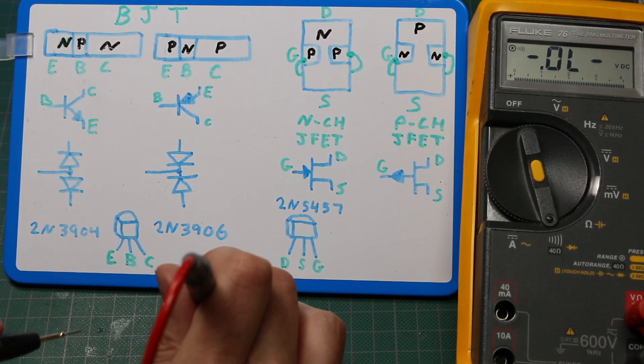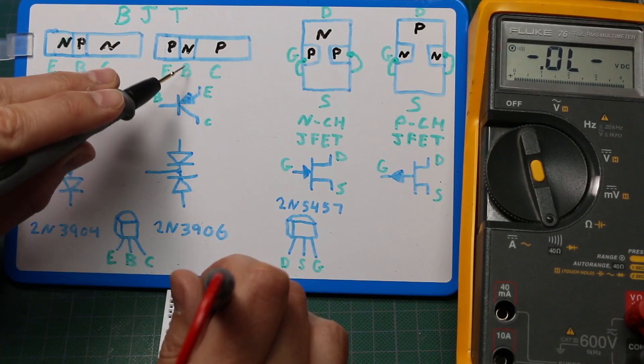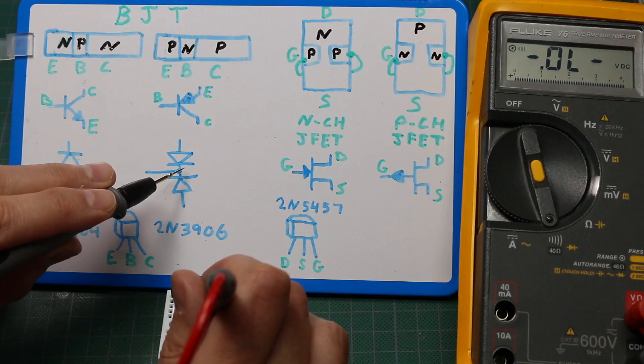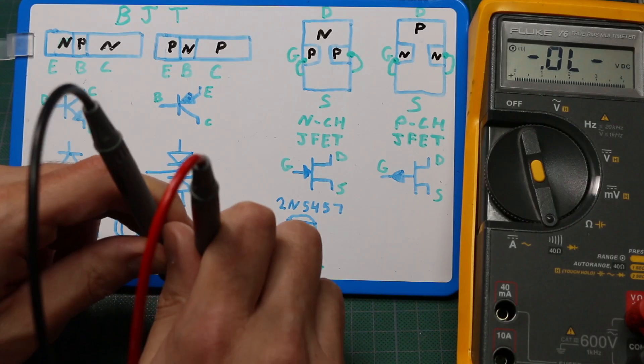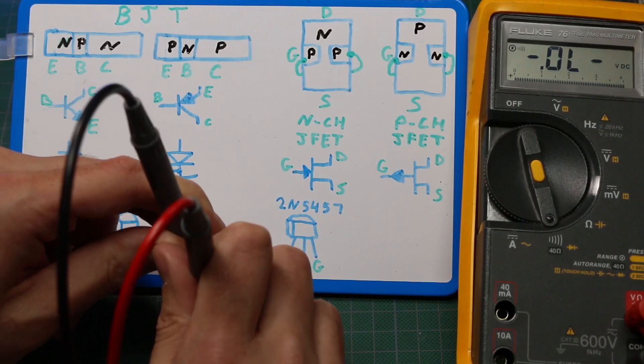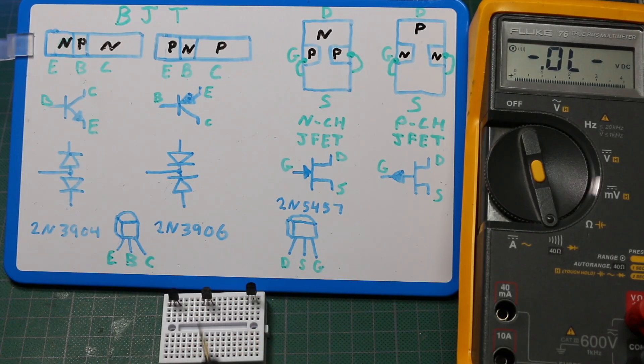So first I'll check the reverse bias condition here to make sure the diodes aren't shorted. So I've got positive on the base, or the cathode, and I'm going to put negative on emitter and negative on collector, and there is no continuity. So these diode junctions appear to be intact.